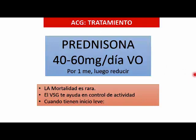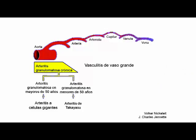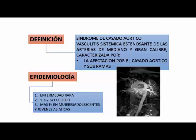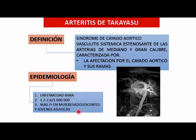Ahora vamos con la arteritis de Takayasu. La arteritis de Takayasu es generalmente un síndrome del cayado aórtico, una vasculitis sistémica estenosante de arterias de mediano y gran calibre, con una gran afectación del cayado aórtico y sus ramas. Es una enfermedad muy rara, generalmente vista más que todo en personas del oriente, en personas asiáticas, más frecuente en mujeres adolescentes y jóvenes asiáticas. Tiene una vasculitis también granulomatosa, estenosante, de arterias medianas y gran calibre.